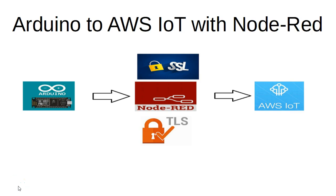Welcome back to the course and welcome to this lecture on transmitting our data from the Arduino IDE over to an intermediary certificate broker on the cloud, which is going to be Node-RED, and then forward that data onto AWS IoT Core.